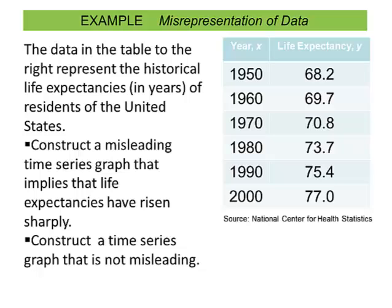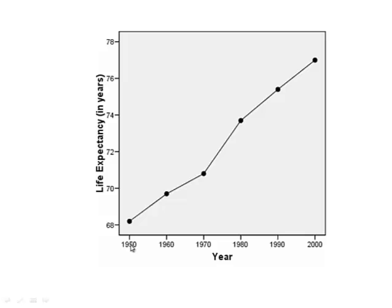The data in the table represents the historical life expectancy in years of residents of the United States. In 1950, the life expectancy was 68.2 years, and as the years go up, the life expectancy goes up. We're first going to construct a misleading time series graph that implies life expectancy has risen sharply, and then we're going to construct a time series graph that is not misleading.